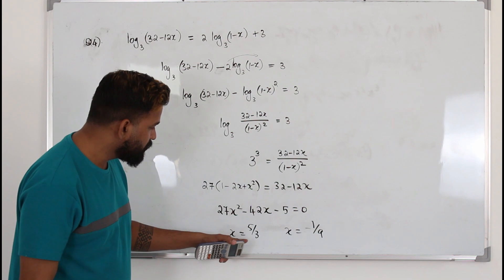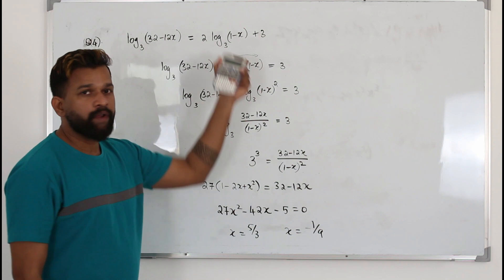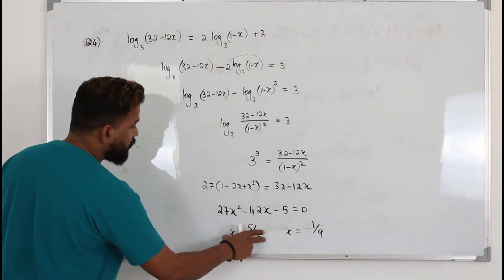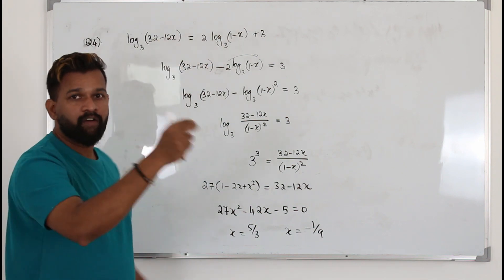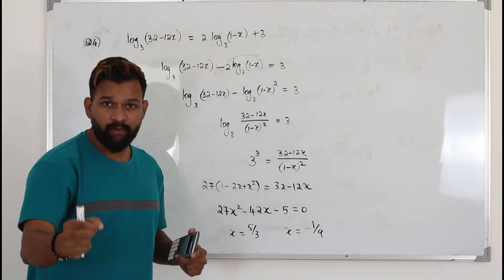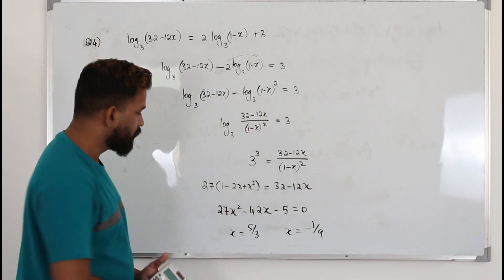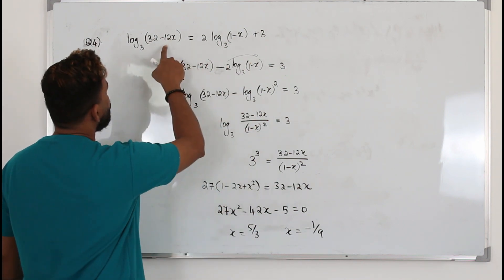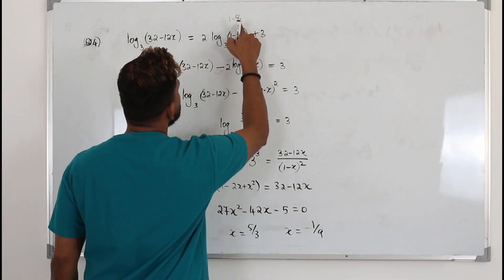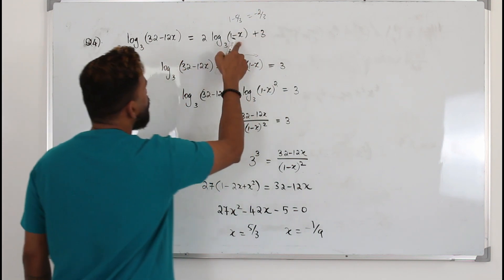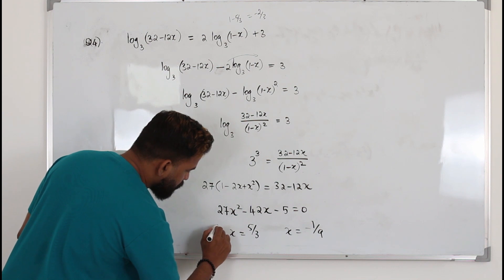You need to take each value one by one and plug it back into the given equation. When you plug in x = 5/3, substituting here gives 1 minus 5 over 3, which is 3 minus 5 over 3, giving negative 2 over 3. Log cannot be negative, so apparently this is not a solution.